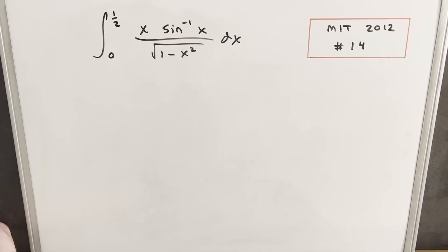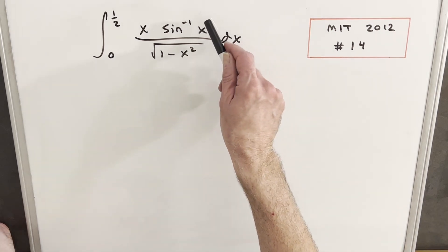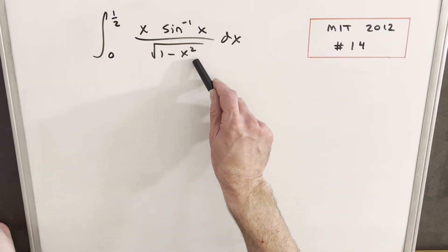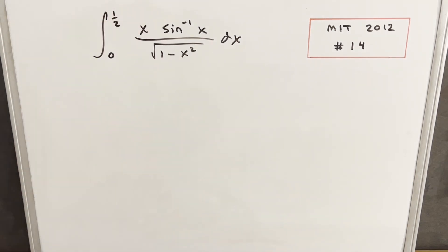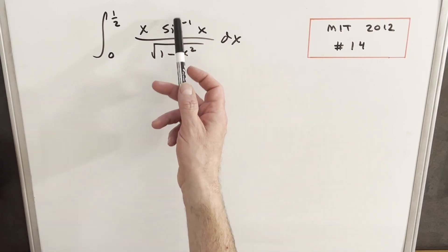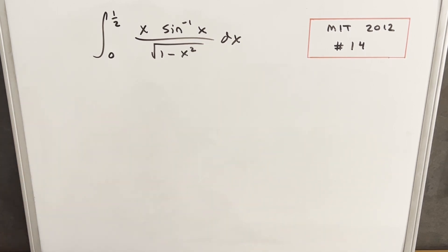At first it looked easy because this is set up for a u substitution. If arcsin is u, then we have the derivative right here. Problem is this x over here ruins our u substitution, so I don't think that's going to work. An inverse function is usually pretty hard to integrate on its own.